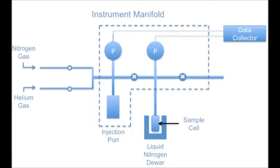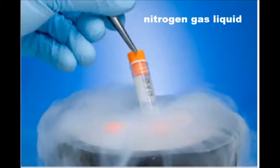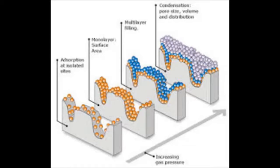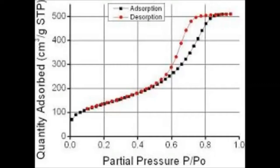How Brunauer, Emmett and Teller works? Samples are commonly prepared by heating or simultaneously flowing gas over the samples to remove impurities. The prepared samples are then cooled with liquid nitrogen and analyzed by measuring the volume of gas adsorbed. The information collected is shown in the form of a BET isotherm, which plots the amount of gas adsorbed as a function of the relative pressure.